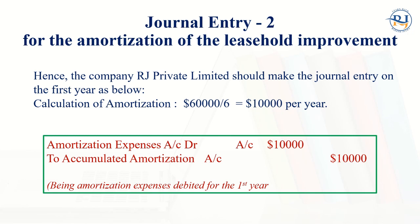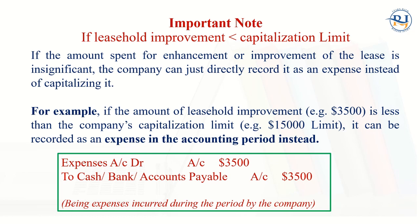It is very important to note: if the leasehold improvement is less than the capitalization limit, and the amount spent for the enhancement or improvement of the lease is insignificant — meaning not a big amount — the company can directly record it as an expense instead of capitalizing. Capitalizing means keeping it on the balance sheet for a long period of time. For example, if the amount of the leasehold improvement is $3,500, which is less than the company's capitalization limit, it can be recorded as an expense in the accounting period instead. The entry would be: Expenses account — debit; Cash, Bank, or Accounts Payable — credit, as the case may be.